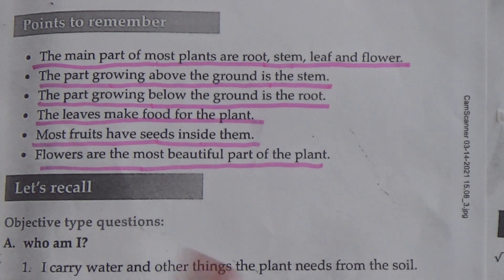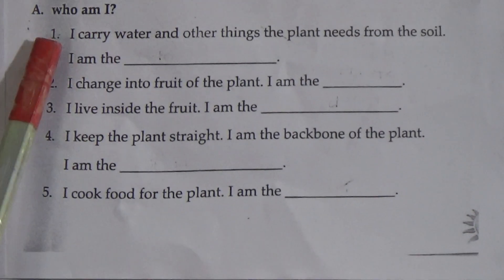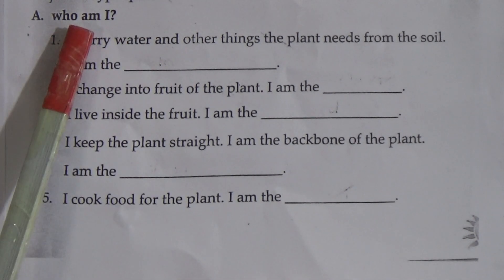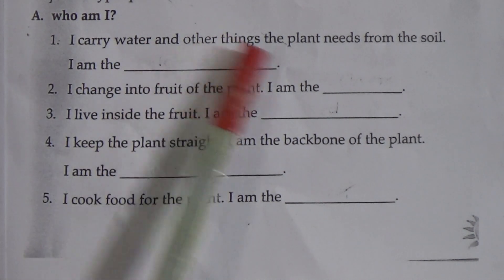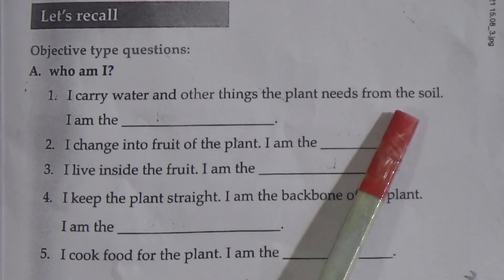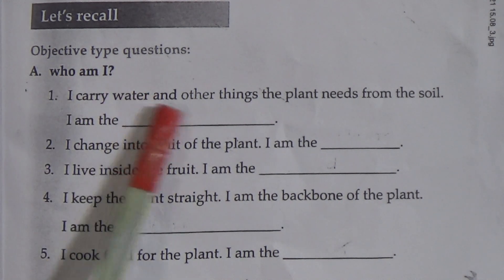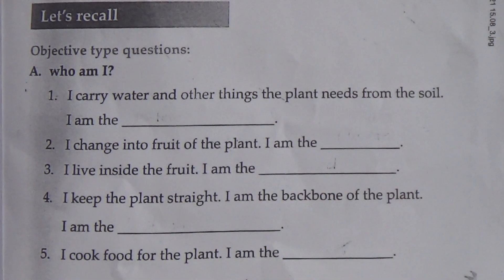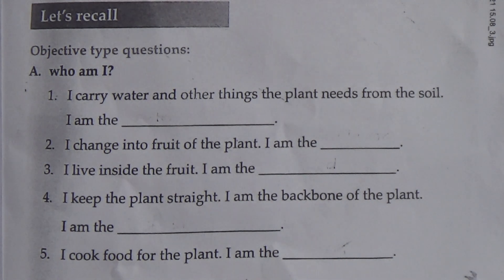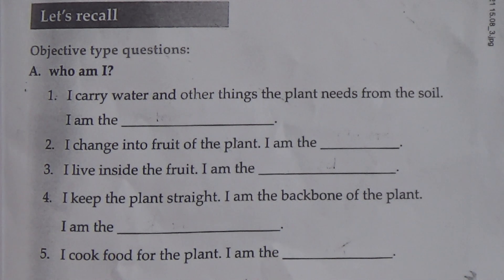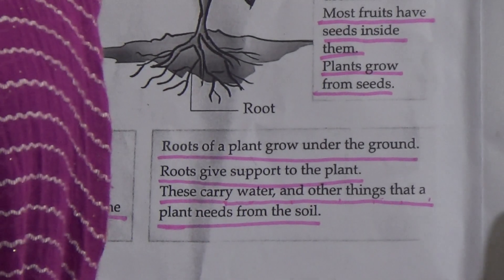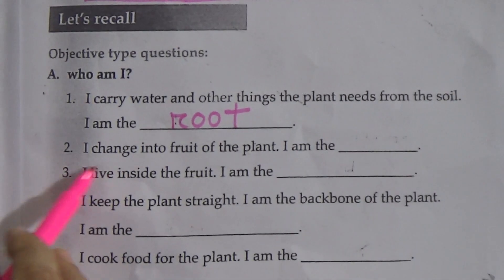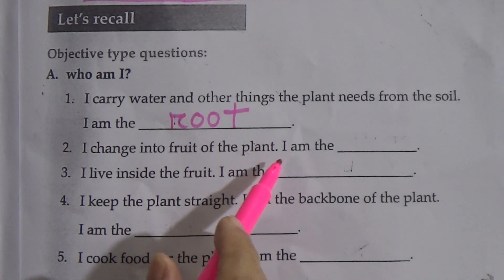Now, fill in the blanks — Who am I? Number one: I carry water and other things the plant needs from the soil. The answer is root, because the function of root is to carry water and other things that a plant needs from the soil. Number two: I change into a fruit of the plant. The answer is flower, because flower changes into fruit.